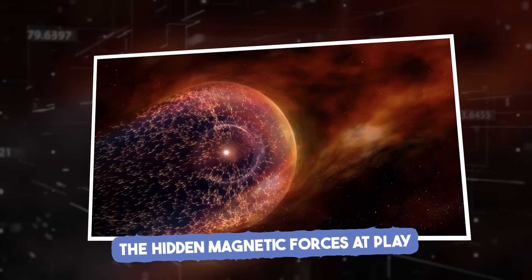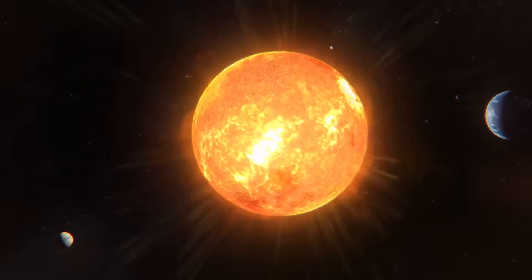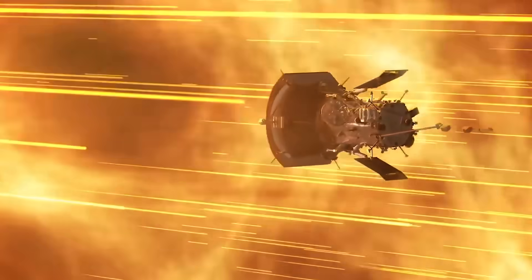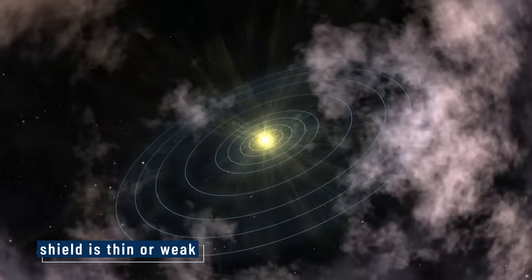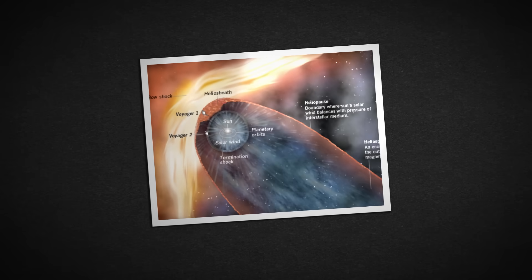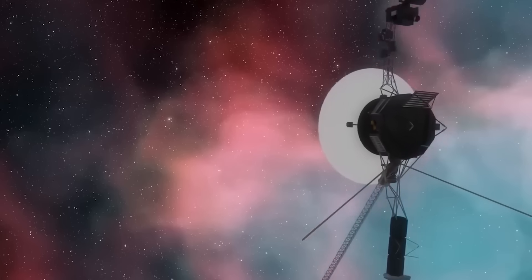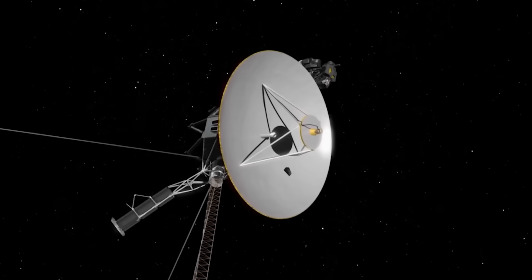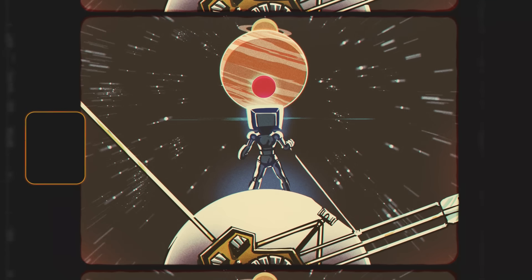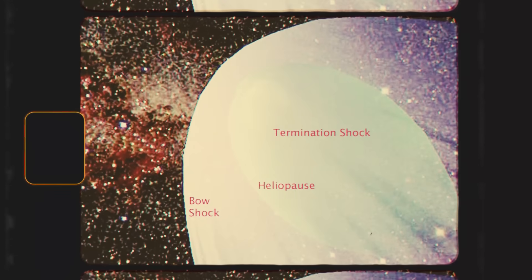The hidden magnetic forces at play. Voyager 1's data revealed that the sun's protective bubble is being squeezed by powerful magnetic fields from the galaxy. These interstellar magnetic forces push against the heliosphere, creating areas where the shield is thin or weak. Instead of a smooth, round bubble, the heliosphere looks more like a distorted, pinched shape. These magnetic pressures cause turbulence at the boundary, mixing solar particles with galactic cosmic rays. Voyager's instruments captured this chaotic region, offering scientists their first real look at how our solar system interacts with the wider galaxy.